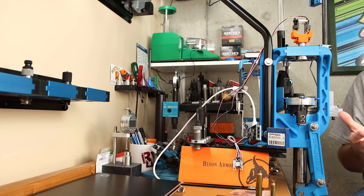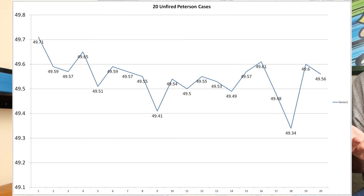For another fun example, here's a chart of about 20 unfired 6.5 Creedmoor Peterson brass cases. And again, we're going to suffer from that first piece is high reading. So it's something you need to look out for.